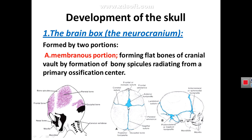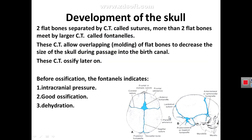We have an anterior fontanelle, posterior fontanelle, and two lateral fontanelles — anterior lateral and posterior lateral fontanelles. The flat bones are formed by membranous ossification, and sutures and fontanelles are formed as connective tissue between the flat bones of the cranial vault.